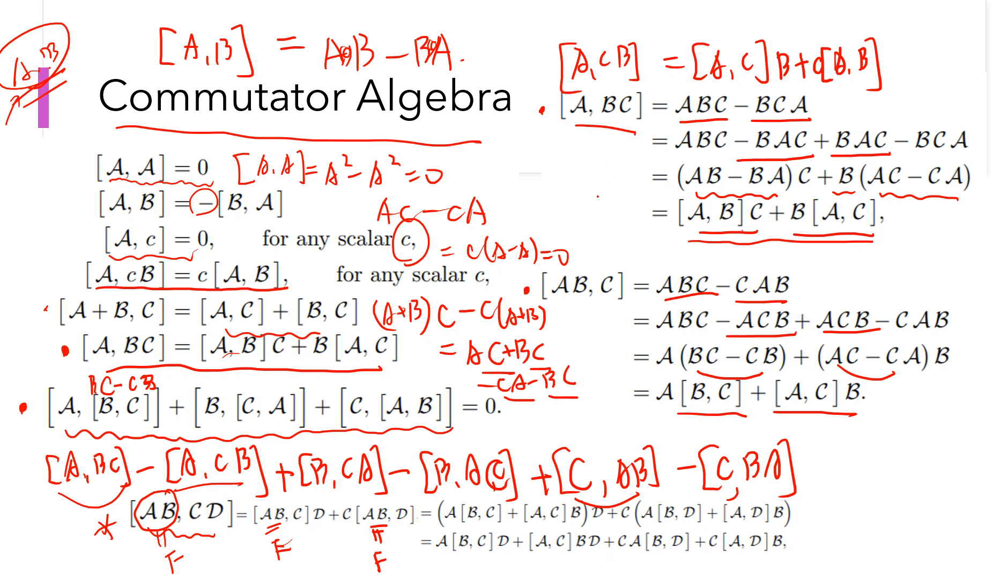And then we can use these two formulas and pull out this, right? So this [AB, C] can be written as A [B, C] plus [A, C] B D plus C [A, B] D plus [A, D] B. So you can expand it, right? Finally, you notice that A B and B are not commute. So you cannot easily exchange, you cannot exchange their order. But you get this.